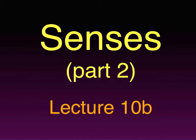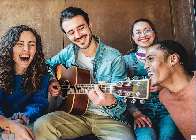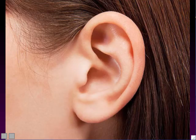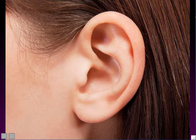Welcome back to this Biology 6 lecture on the senses. This is part two of the senses lecture, and we're going to continue on with more senses and more sense organs. Our next sense organ is the ear, which is where your sense of hearing is located. But there's actually another sense also located in the ear — the equilibrium sense — and we're going to talk about both of those senses in this part of the lecture.